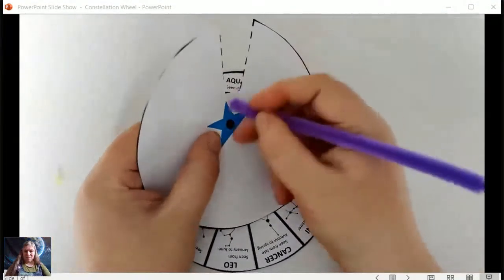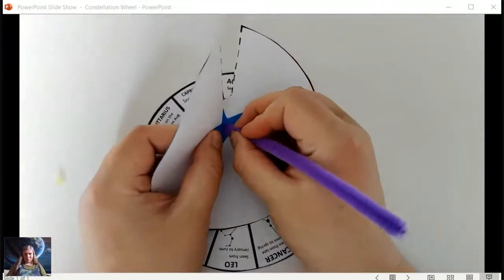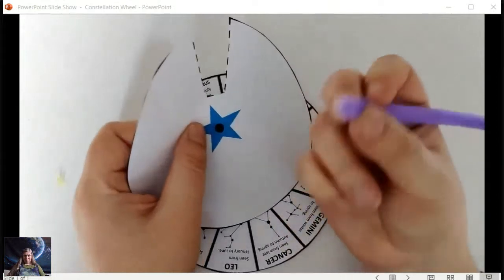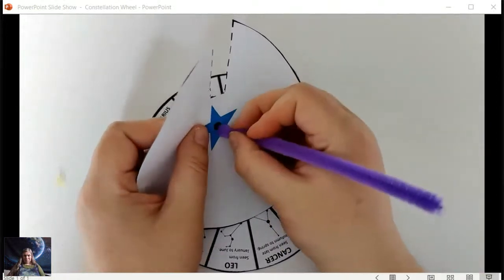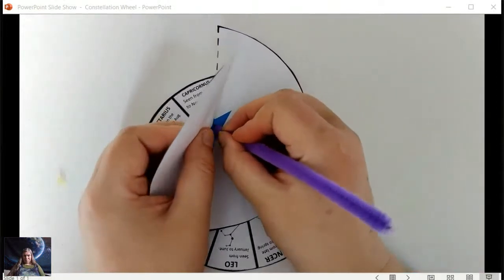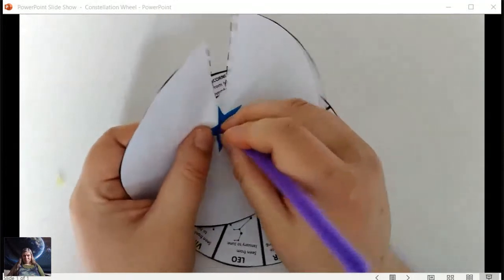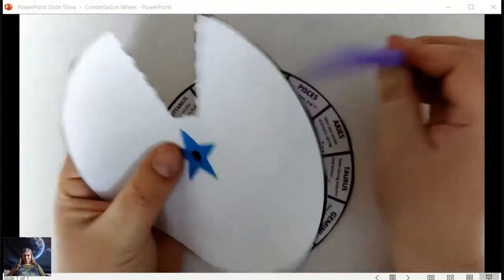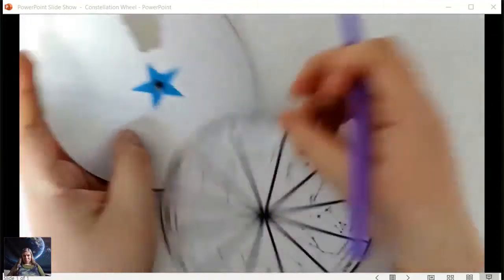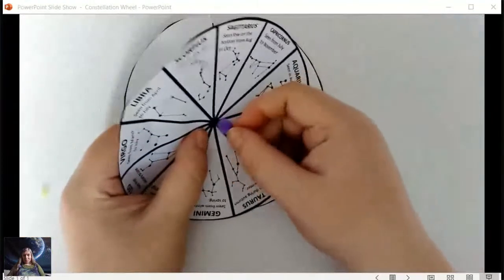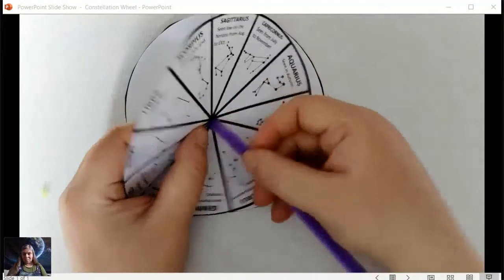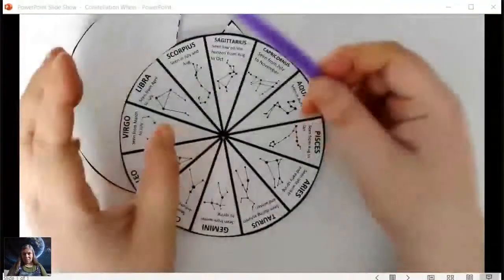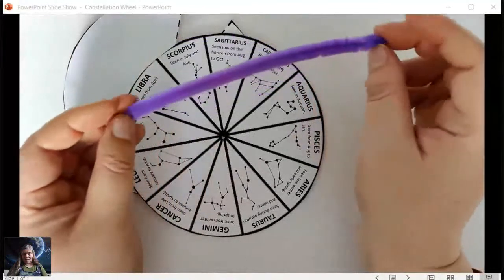I'm just going to push it through this black dot in the middle of the star, all the way through, partly to make the hole a little bigger, partly because it's quite satisfying. Going to do the same here. Push it through and out the other side. Brilliant.